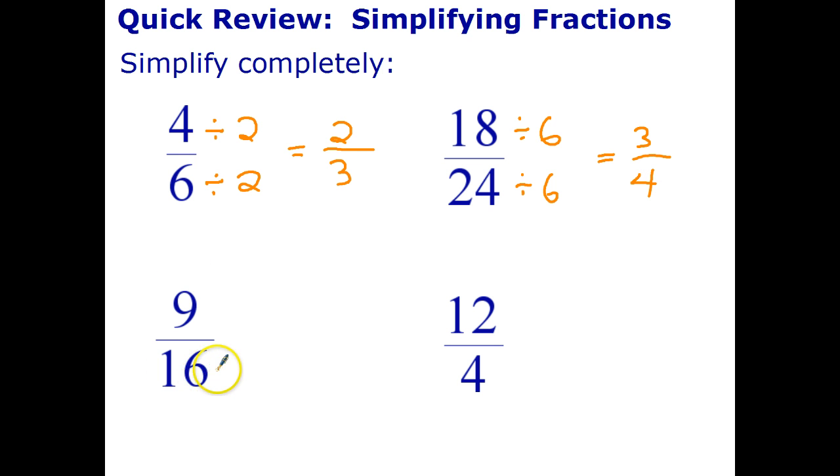9 on 16, well the factors of 9 are 1, 3, and 9. Factors of 16 are 1, 2, 4, 8, and 16. That's already simplified. And the last question, 12 divide 4, I can divide top and bottom by 4. And that gives me 3 over 1. And we don't leave numbers with denominator of 1 like that. That just simplifies to 3. So if you have 1 in your denominator, you don't need to write the fraction. Let's go have a look at index law number 2.